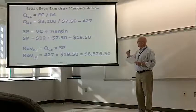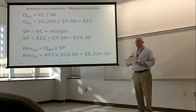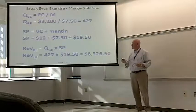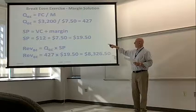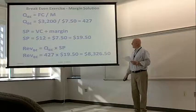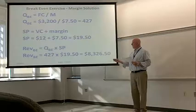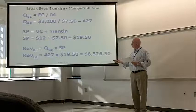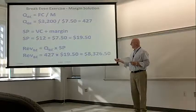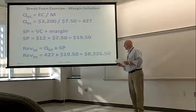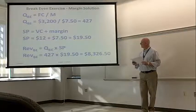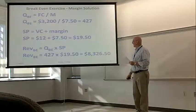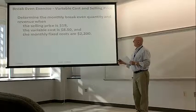However, we do need the variable cost and the margin to determine the selling price in order to calculate the breakeven revenue. The selling price is $12 plus $7.50 or $19.50. To get the revenue, multiply the breakeven quantity by the selling price, 427 times $19.50 or $8,326.50. So there may have been some rounding up there.